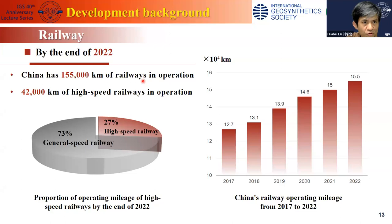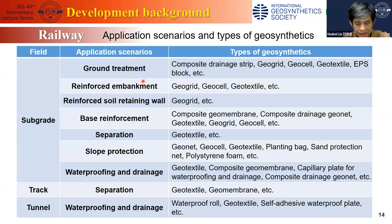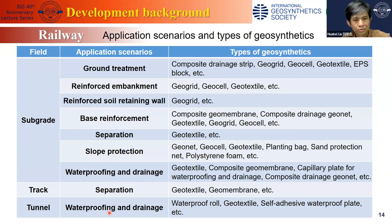Let's look at the main sectors applying geosynthetics. First, railway: by the end of 2022, China's railway operating mileage was 155,000 kilometers, of which 42,000 kilometers were high-speed railway. Geosynthetics are used in different components of railway, from subgrade and track to tunnel, covering application scenarios ranging from ground treatment and reinforcement to waterproofing and drainage. Almost all types of geosynthetics are used in the railway industry.